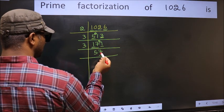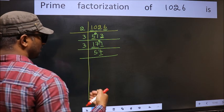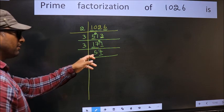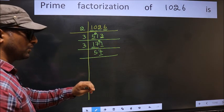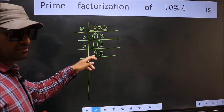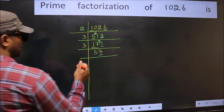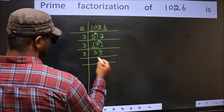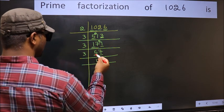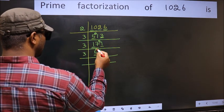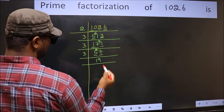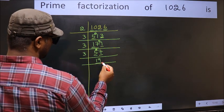Now last digit is 7, not even, so not divisible by 2. To check divisibility by 3, we add the digits: 5 plus 7 is 12. Is 12 divisible by 3? Yes. So this number is also divisible by 3. So take 3 here. First number 5 — a number close to 5 in the 3 table is 3 times 1 is 3. 5 minus 3 is 2, carried forward: 27. When do we get 27 in the 3 table? 3 times 9 is 27. Now we have 19.